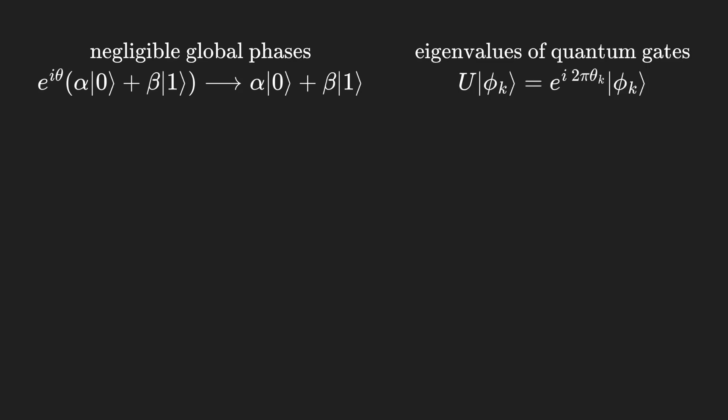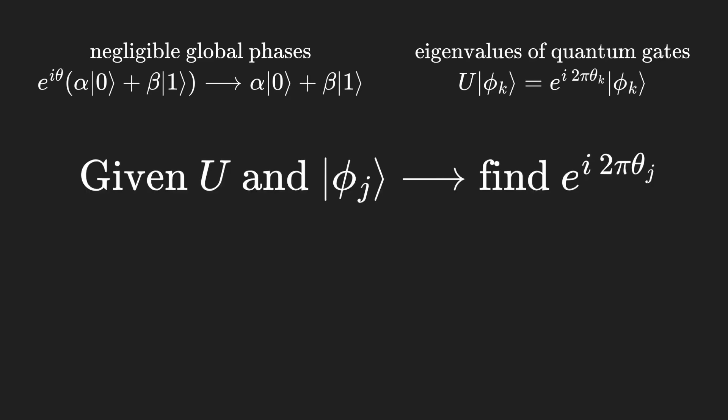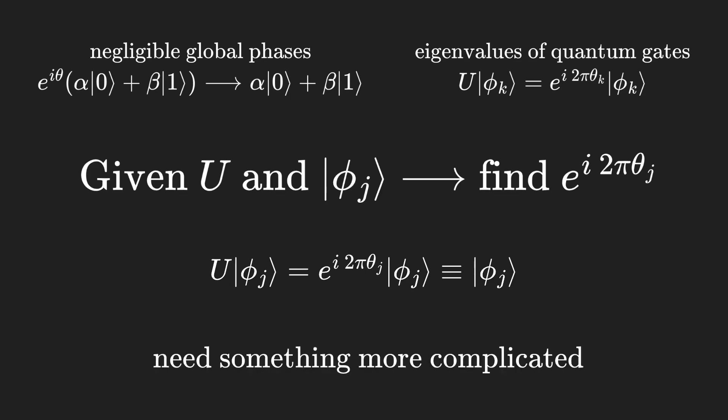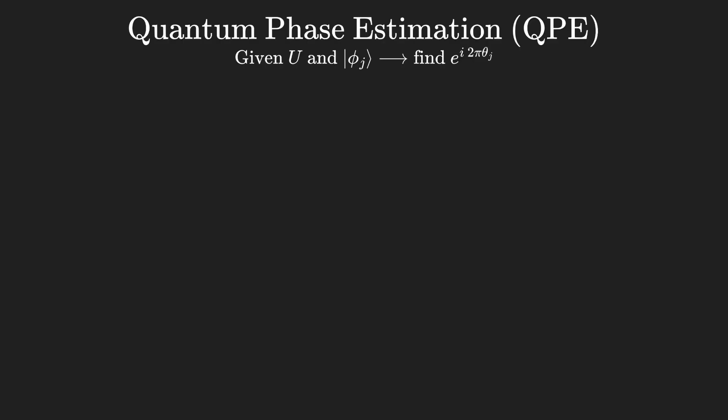What if, given a certain known gate and one of its known eigenstates, we wanted to find the corresponding eigenvalue? We get nothing from just applying the gate to its eigenstate, since that spits out a global phase. We need to find a different way. For this purpose, there is a well-known quantum algorithm known as quantum phase estimation, or just QPE.